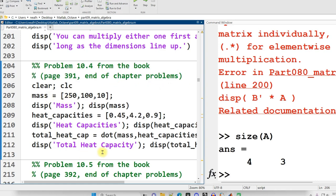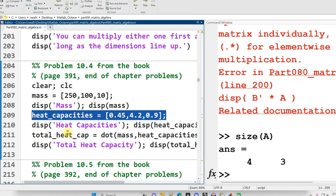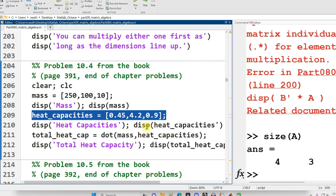And this question asks us to determine the heat capacity of some particular object. And this object is composed of different parts or different materials. And you can see the masses of the three different materials and the three different heat capacities of the materials.